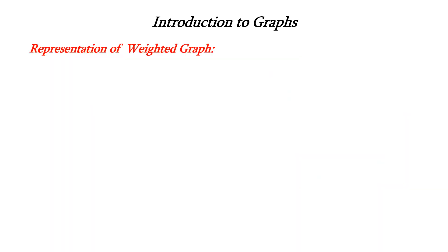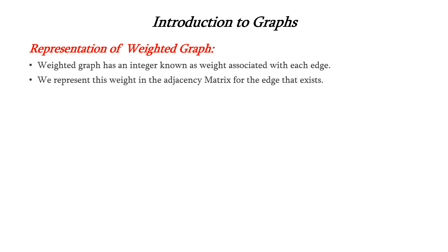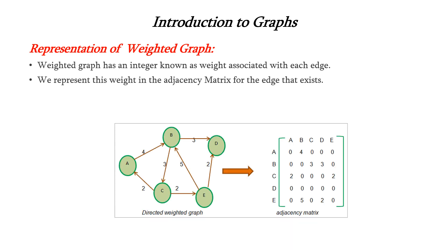Next is representation of adjacency matrix for a weighted graph. In a weighted graph we have an integer weight associated with each edge, so we represent that weight in the adjacency matrix for the edge if it exists. From A to A no link; from A to B we have a link and the associated weight is 4, so instead of writing 1 we write the weight. If the edge exists we write the weight; if the edge does not exist we write 0.